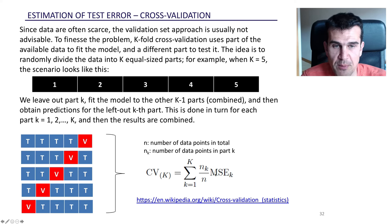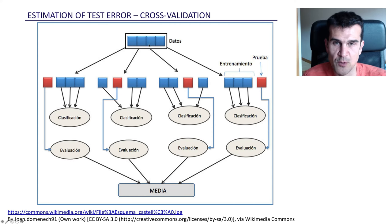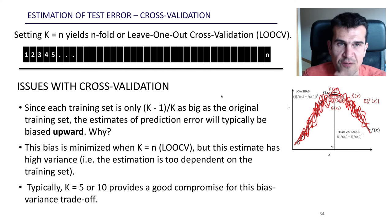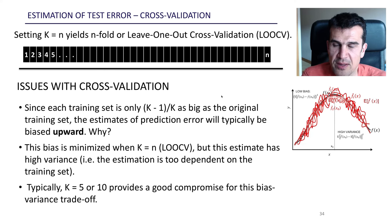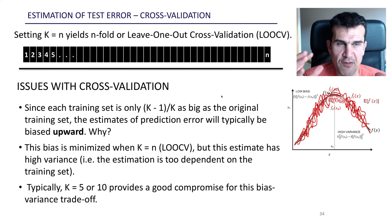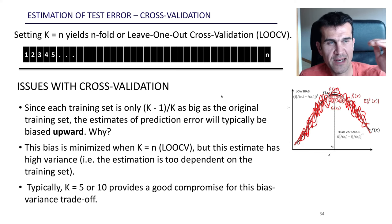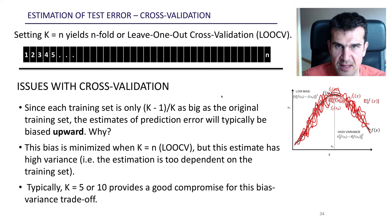For classification problems the approach is exactly the same. We also discuss a particular case of cross-validation called leave-one-out cross-validation. In this case we partition the dataset into as many blocks as there are data points — each block is composed of just one single observation. Therefore in leave-one-out cross-validation we are fitting as many models as there are data points in the dataset.